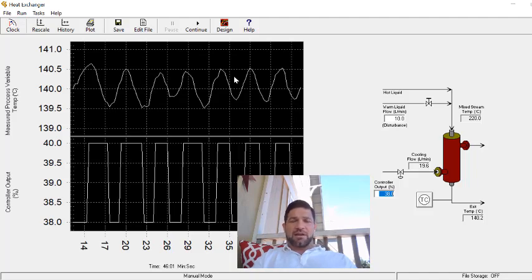So increase the gain by about ten percent. Increase the derivative by about ten percent. And see how that affects the controller response. And make changes until you're happy with the response.